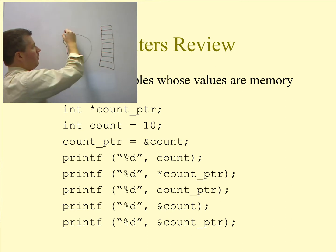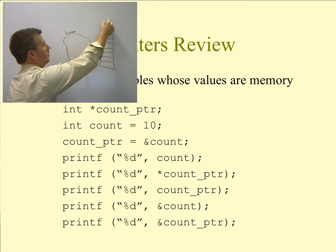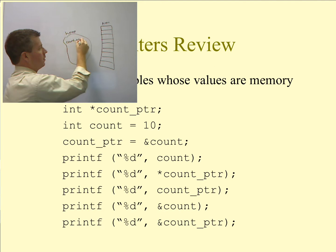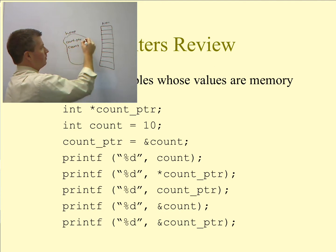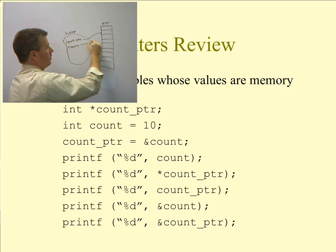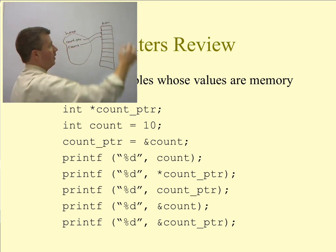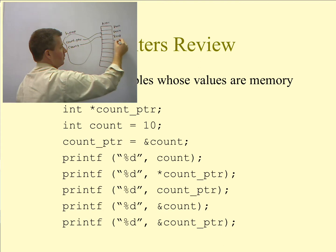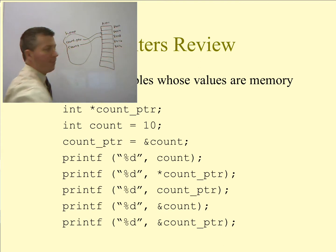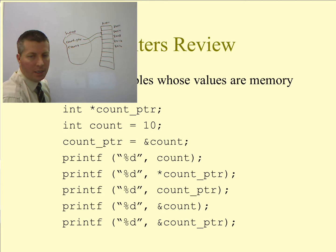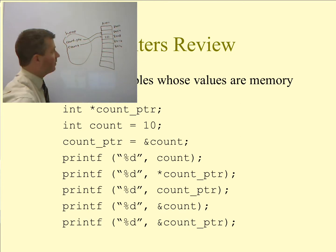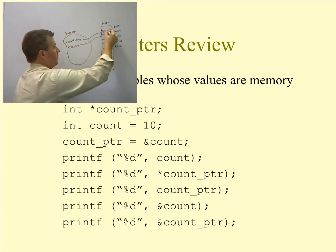I'll draw my main memory here, and over here will be my heap. I have a variable called count pointer and a variable called count. Each one of them points to an individual location in memory. Count gets the value of 10. Count pointer gets the address of count, which in this case will be 8008.